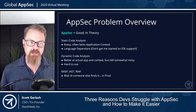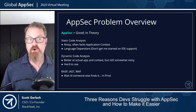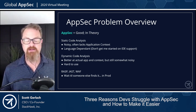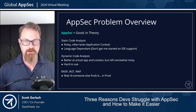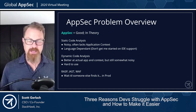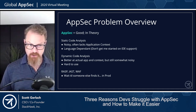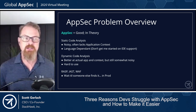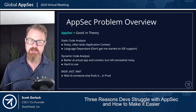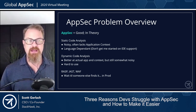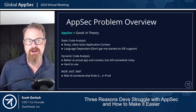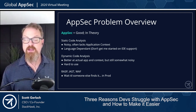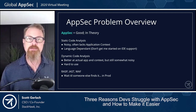There are some problems with some of these things as well. Static code analysis is sometimes noisy and often lacks context of how the application is running, and it's language dependent. So if you're writing in Go or something similar, there are very few tools that provide value. Dynamic code analysis is better at actual app context, but still somewhat noisy, and a ton of those tools are really hard to use. RASP, IAST, and WAF are basically wait till someone else finds it in production. Not to say they're bad, but they're not the first thing you should deploy in your AppSec journey.